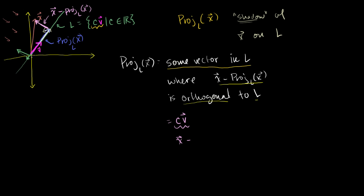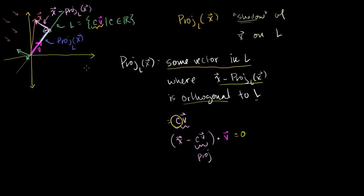From the drawing it almost looks like the projection is about two times V. We know that x minus our projection — which is cV — is orthogonal to L. Orthogonality means its dot product with any vector in L is 0. So let's dot it with V, our defining vector for L, and we know that must be equal to 0. Let's use properties of dot products to find a particular value of c, because once we know c, we just multiply that times V and we have our projection.